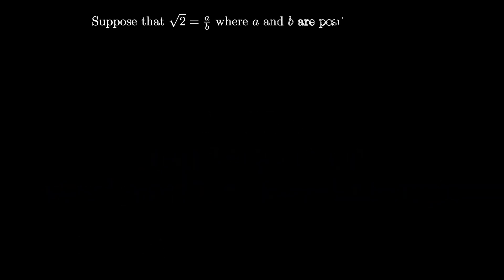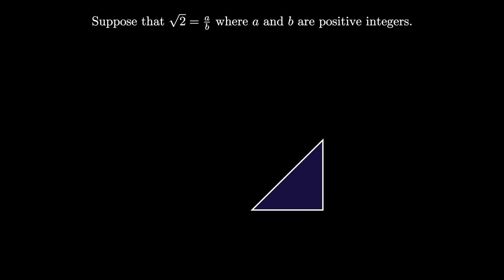Let's suppose that the square root of 2 is rational. That means that the square root of 2 is a divided by b, where a and b are both positive integers. Recall that the square root of 2 is the hypotenuse of a right isosceles triangle with both legs equal to 1. You can verify this using the Pythagorean theorem.